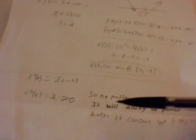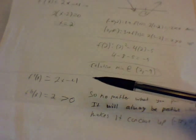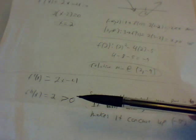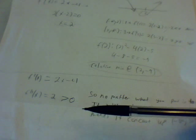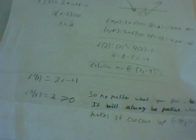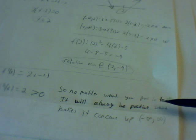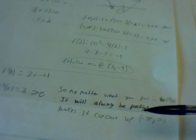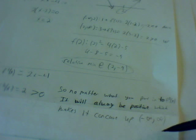Next we're going to find if there is a point of inflection by taking the second derivative of the first derivative. That gives us just 2. Since that's always positive, f''(x) is always positive, which means the function is concave up from negative infinity to infinity, and there are no points of inflection.